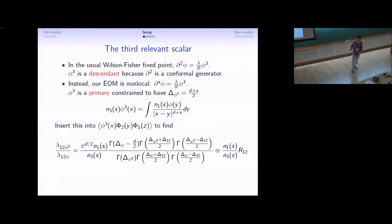We can use this equation to relate an n-point function with phi to an n-point function with phi cubed. It's particularly convenient when we do this for a three-point function involving scalars because these are fixed kinematically up to a constant. When we perform the integral using the star formula, we find that the ratio of OPE coefficients is the ratio of normalizations multiplied by this object, which consists just of nice gamma functions.